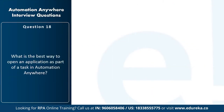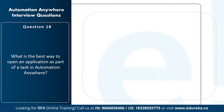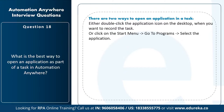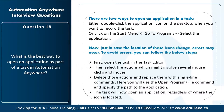The next question is: what is the best way to open an application as part of a task in Automation Anywhere? You can either double-click the application icon on the desktop or click the start menu, go to programs, and select the application. If the location of these icons changes, it will result in an error. To avoid this, open the task in the task editor, delete the mouse click actions, and replace them with a single-line 'open file' command specifying the path of the application — the task will then open the application regardless of icon location.